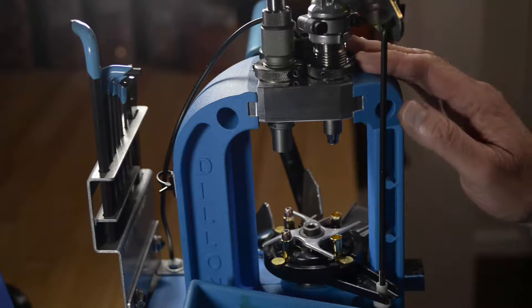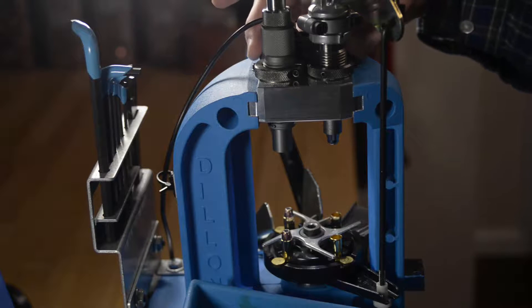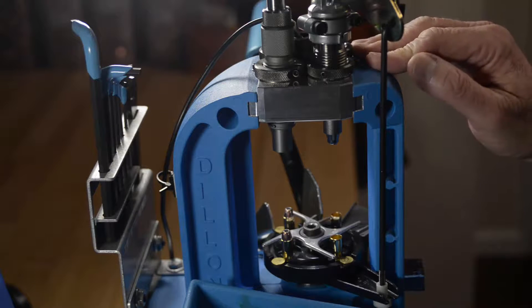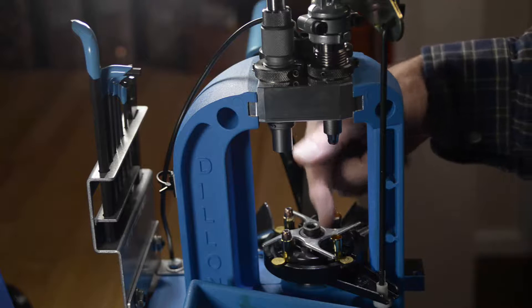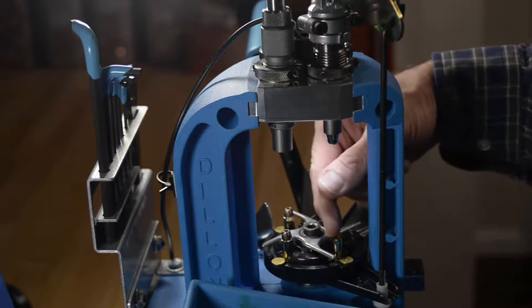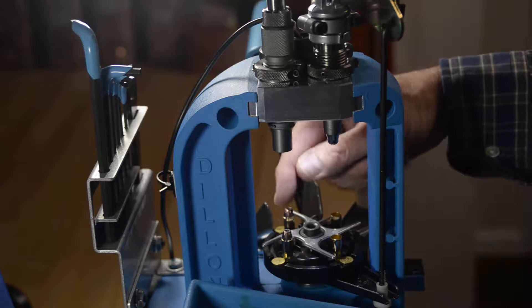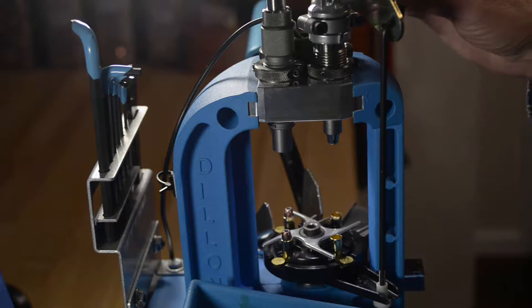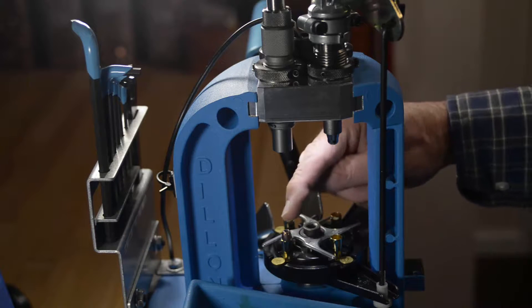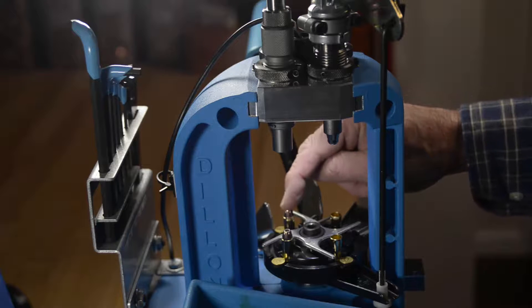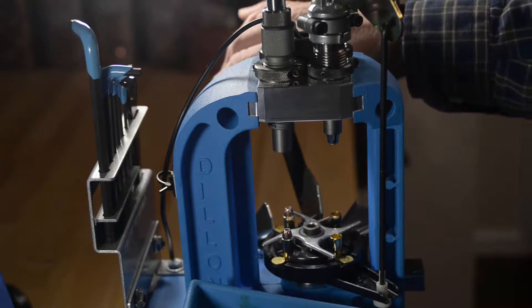Now that the dies are installed, you want to tighten the screws. To do that, you want to place two cases at the sizing and powder assembly station and use two of the rounds we made while we were installing the dies. Put them at the bullet seating and crimping station, then you raise the shell plate.